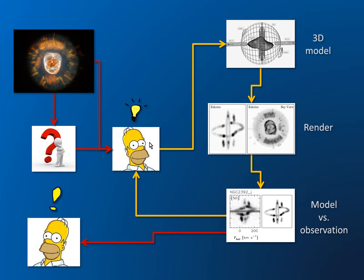Then you go on and construct a 3D model, which you render in some way that you can compare with your data — either images, spectra, PV diagrams, channel maps, etc. And these you confront with the observations. Here is an observation of a PV diagram and here is a model. Then you come to any possible conclusions that you might want to publish.